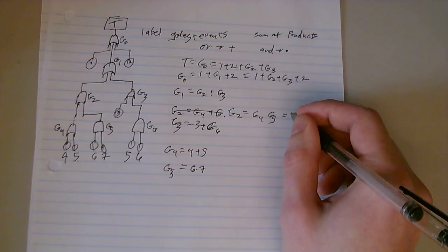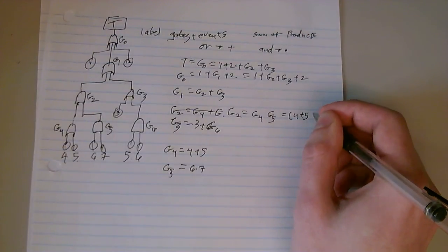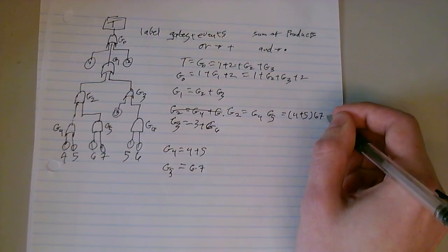Which means that this whole thing equals 4 plus 5, 6, 7.